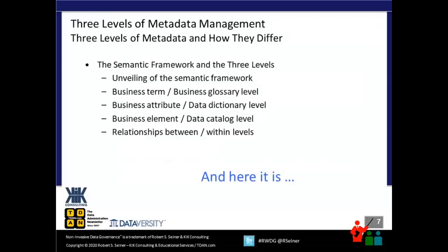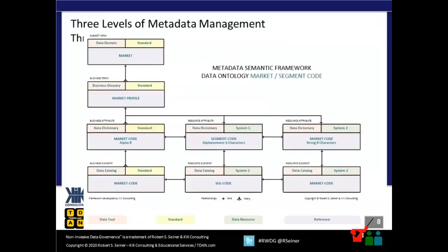The three levels are: business terminology — going back to common business language — the business attribute, which is a breakdown of terminology such as what information do we have about a customer or a product, and then the specific elements of information and data pertaining to that attribute group. The linkage between these things and the relationships between the levels will become vital in making this information available and helpful to people in the organization. Here is the new semantic framework I want to share with you — it's rather simple in its setup.